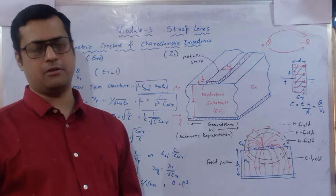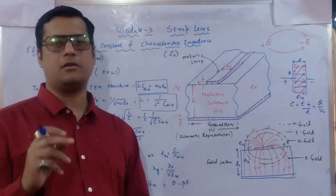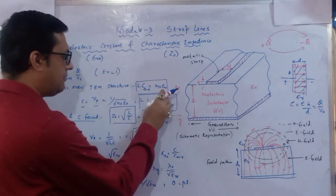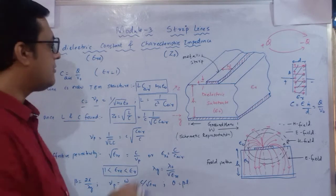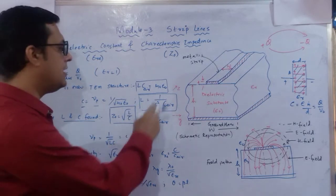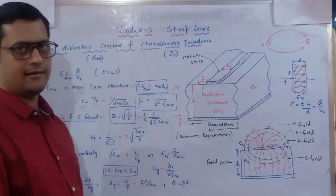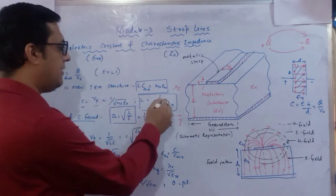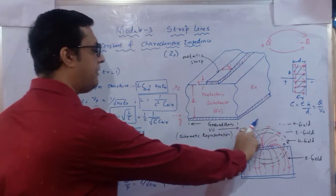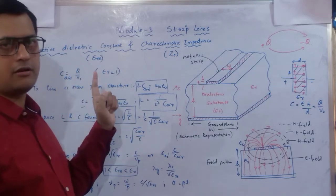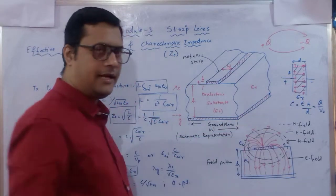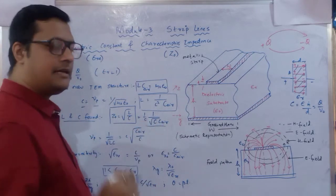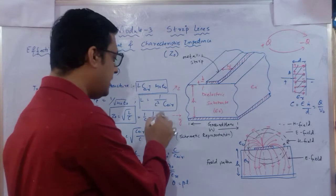Substituting the L value: Z₀ = 1/(c × √(C × C_air)), where C_air is the capacitance above the metallic plate (Q/V₀ with air medium, epsilon_r = 1) and C is the total capacitance of the medium. So Z₀ = 1/(c × √(C × C_air)). The phase velocity is then 1/√(LC) = c × √(C_air / C).